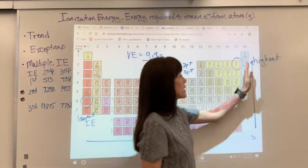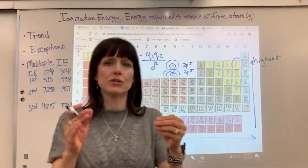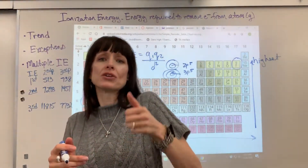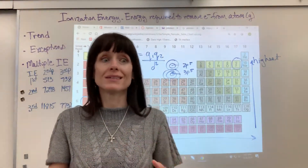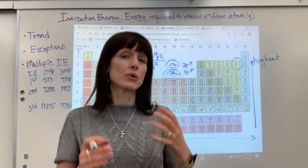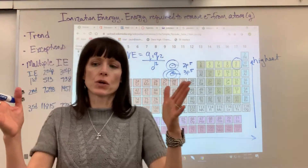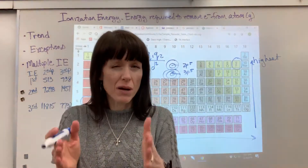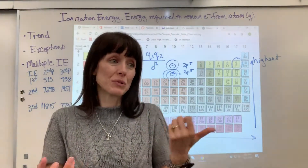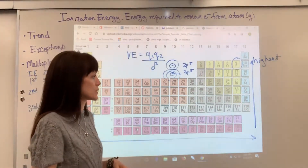As we go up the periodic table, the distance between the proton and the electron decreases, which means the potential energy increases, which means it takes more energy to remove that electron. Coulomb's Law gives us that inverse relationship: the smaller the distance, the greater the potential energy, which means the greater the ionization energy — more energy required to remove an electron.